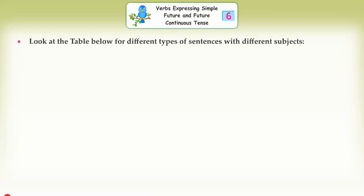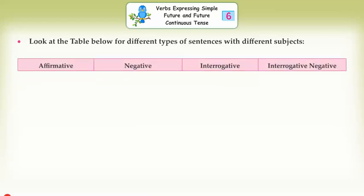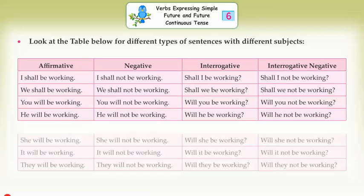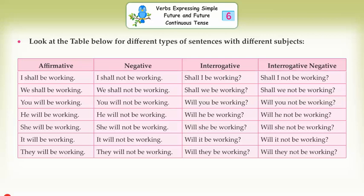Look at the table below for different types of sentences with different subjects. Affirmative, Negative, Interrogative, Interrogative Negative. I shall be working. I shall not be working. Shall I be working? Shall I not be working? We shall be working. We shall not be working. Shall we be working? Shall we not be working? You will be working. You will not be working. Will you be working? Will you not be working? He will be working. He will not be working. Will he be working? Will he not be working? She will be working. She will not be working. Will she be working? Will she not be working? It will be working. It will not be working. Will it be working? Will it not be working? They will be working. They will not be working. Will they be working? Will they not be working?